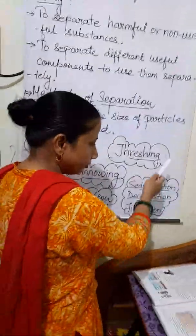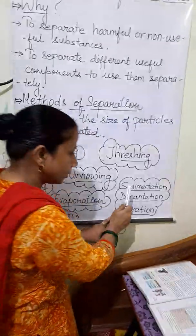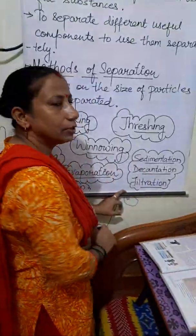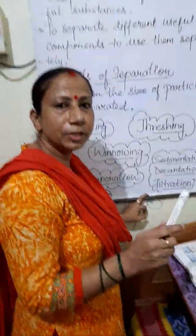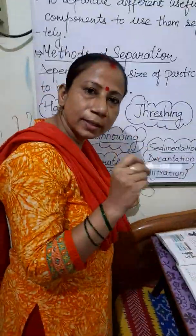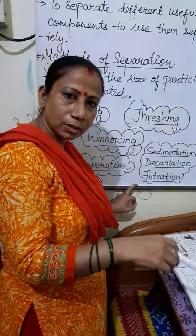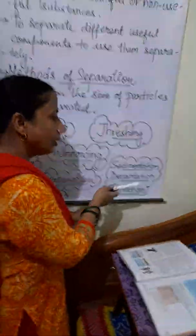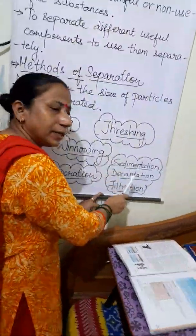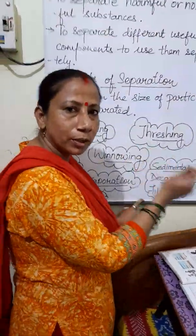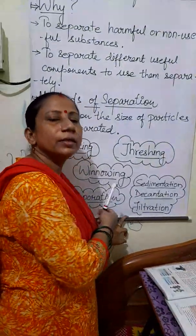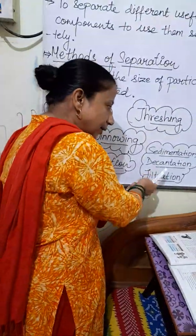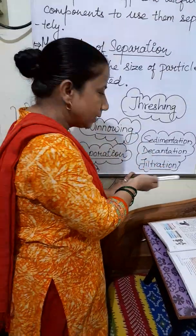Then there is one method that involves three different processes — sedimentation, decantation, and filtration. In sedimentation, impurities mixed in water settle down at the bottom, and that settled material is called sediment. Then the liquid above is transferred to another container without disturbing the sediment — that process is called decantation.